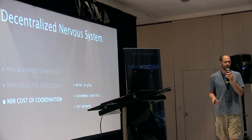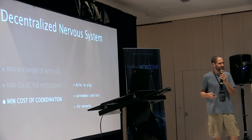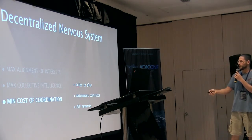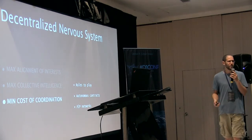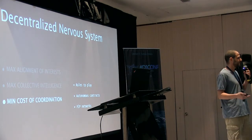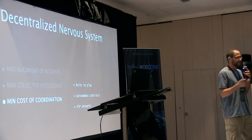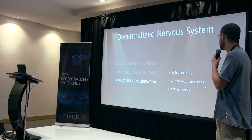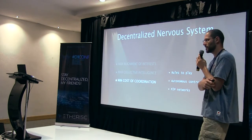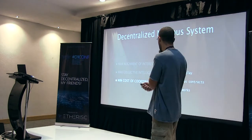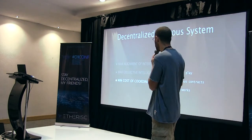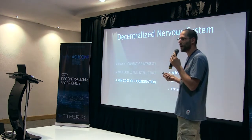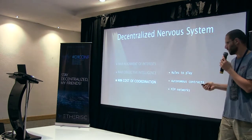Finally, you want to minimize the cost of coordination, which is the easiest because it's already done — we have blockchain. There are rules to play, so we don't need to struggle deciding on rules all the time. We can just play under those rules, and there are smart contracts to execute under them, and P2P networks to connect us all. It's the hardest part conceptually, but it's already solved.